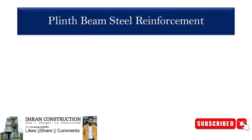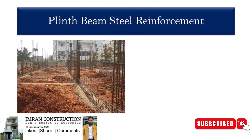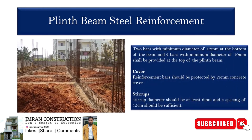Plinth beam steel reinforcement: The reinforcement details of plinth beam are similar to that of a normal beam. Two bars with a minimum diameter of 12 mm are provided at the bottom of the beam and two bars with a minimum diameter of 10 mm shall be provided at the top of the plinth beam. It is provided with a cover of 25 mm, which can change based on the exposure condition. Stirrups used should be a minimum of 6 mm in diameter and the spacing of these stirrups must be a minimum of 15 cm.